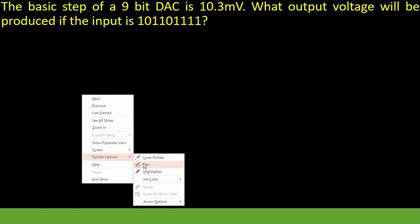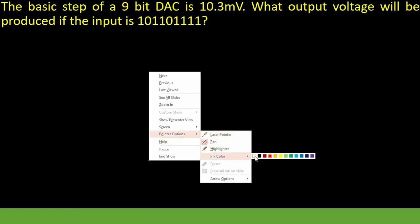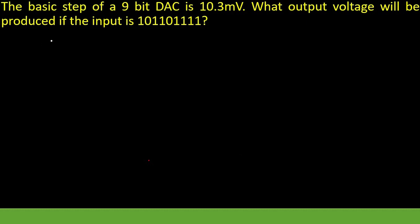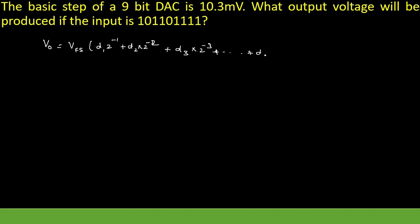we already know the formula — we have a fixed formula to calculate the output voltage. Let me write the formula first. The formula to calculate the output voltage is: V0 is equal to VFS into D1 times 2 power minus 1, plus D2 times 2 power minus 2, plus D3 times 2 power minus 3. This is the formula where V0 represents the output voltage and VFS represents the full scale output voltage.